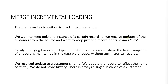For example, we receive an update for a customer from the source and we want to keep just one record per customer key. This is a classic example of slowly changing dimension type 1. We keep the latest snapshot of a record in the data warehouse. We update and/or insert a new record in the dimension table — this is referred to as an upsert. So there's always a single instance of a customer record, regardless of how many times this record has been updated.